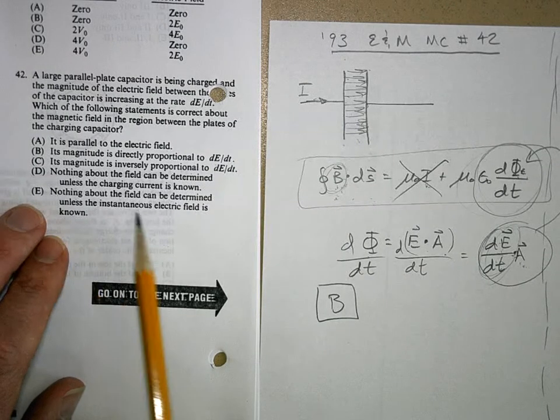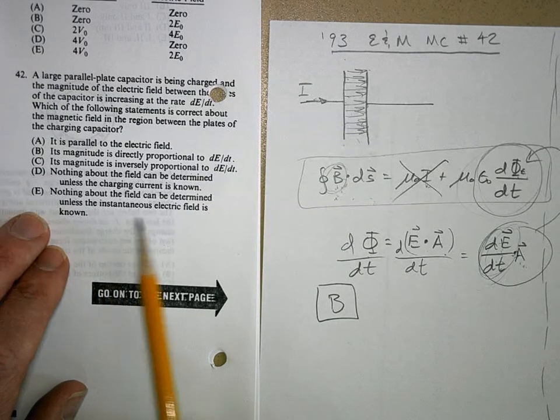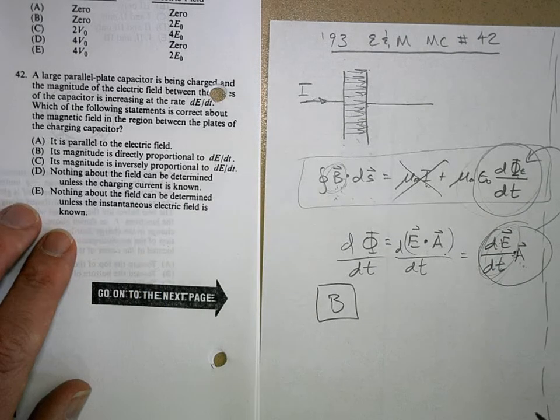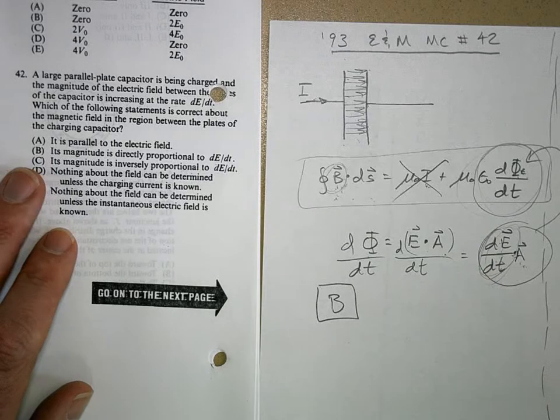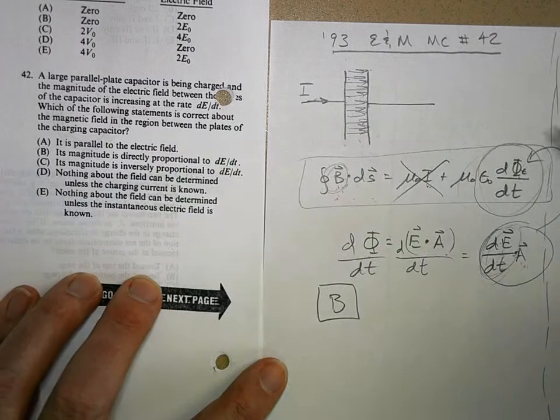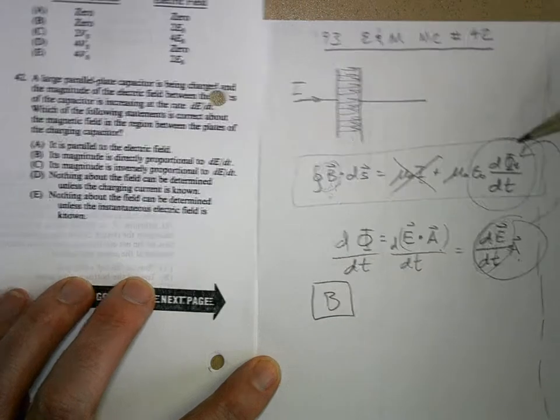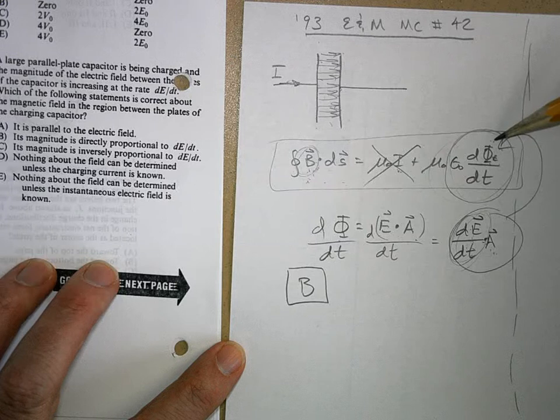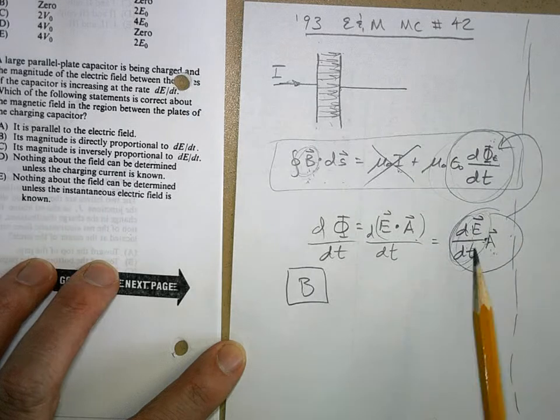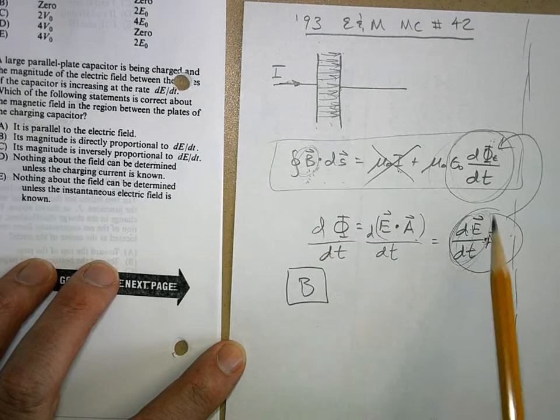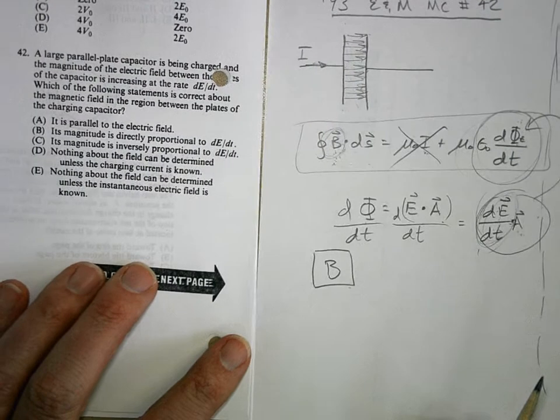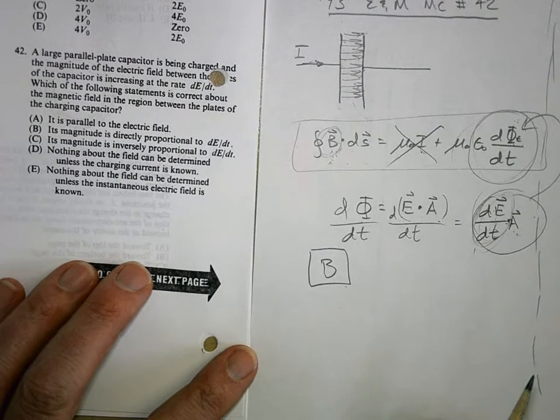And then E: nothing about the field can be determined unless the instantaneous electric field is known. No, you just need to know the rate of change of electric field. So by using Ampere-Maxwell's law and understanding that this electric flux is equal to dE/dt times A, you can see that B is going to be directly proportional to this, and that's why the answer is B.